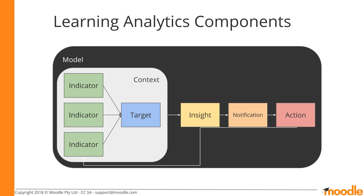Models can contain indicators, targets (the outcome we are trying to predict), insights (the predictions themselves), notifications (messages sent as a result of insights), and actions offered to recipients of messages, which can become indicators in turn.